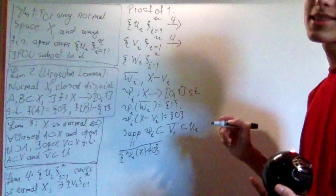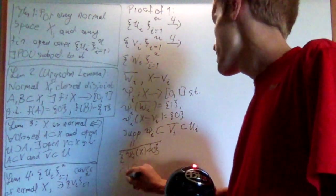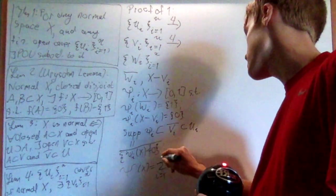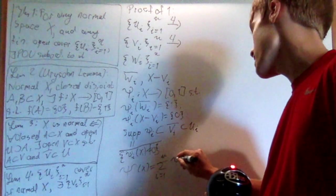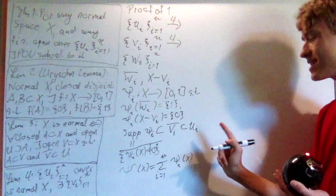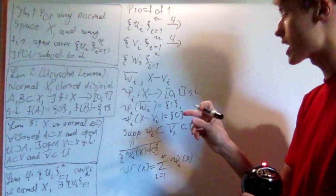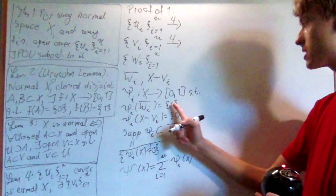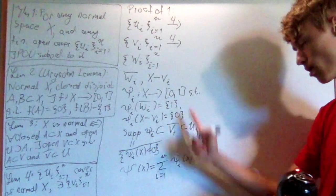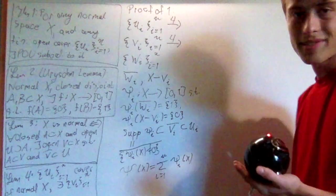And we use the exact same trick that we did last time. We define a new capital psi of x function, which is the sum from i equals 1 to n of psi i of x. Now this is always going to be positive due to the fact that wi is an open cover of the entire space. And it's equal to 1, so psi of wi is 1. And so one of these is always going to have to be 1. So it's always going to be positive.